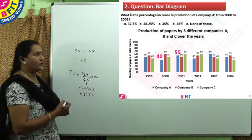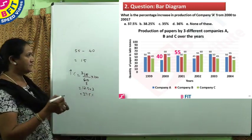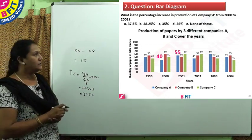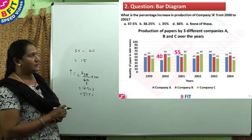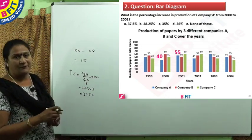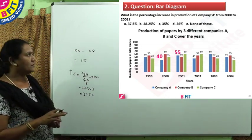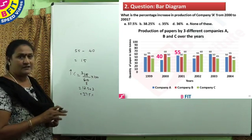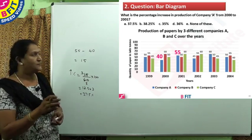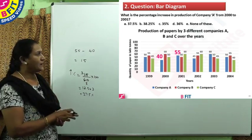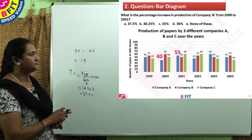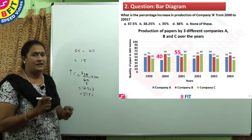The percentage increase for Company A from 2000 to 2001 is 37.5 percent. The answer is option A.